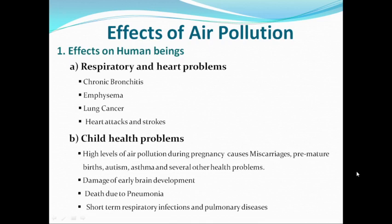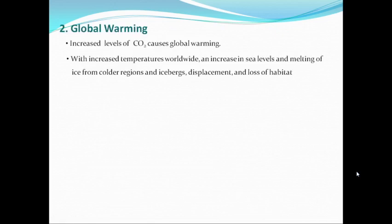Another effect could be on children. High levels of air pollution during pregnancy can cause miscarriages, premature births, autism, asthma, and several other health problems. Air pollutants can also damage the early brain of a child. There could also be death of infants due to pneumonia, and inhalation of air pollutants can also result in short-term respiratory infections as well as pulmonary diseases among infants and children.